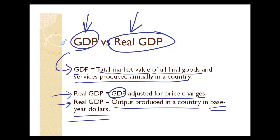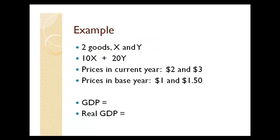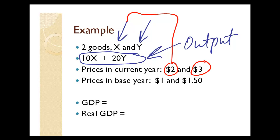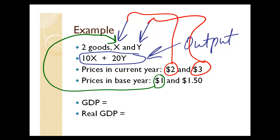Let's give a numerical example to clearly see the difference between GDP and real GDP. Let's say we have a small economy with two goods, X and Y. Currently in that economy — the current year — the output is 10X and 20Y. The prices in the current year are $2.00 for good X and $3.00 for good Y. The prices in the base year are $1.00 for good X and $1.50 for good Y.